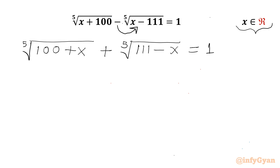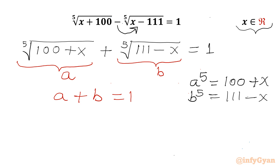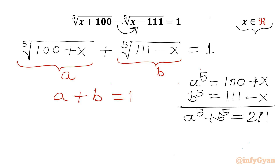Now I will use substitution. Let the first radical be A and the second radical be B. Then the first equation is A plus B equals 1. We can also write: A to the power 5 equals 100 plus x, and B to the power 5 equals 111 minus x. Adding both gives A⁵ plus B⁵ equals 211. So our system is: A plus B equals 1 and A⁵ plus B⁵ equals 211.